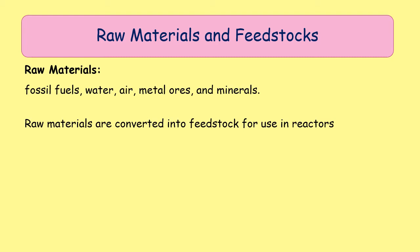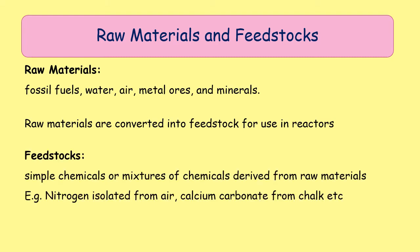Raw materials can sometimes be converted into what we call feedstocks to go into your reactor. A feedstock is a simple chemical or mixture that is derived from raw materials. For example, if air is the raw material and you isolate nitrogen from the air and use it, then nitrogen is a feedstock. If you take chalk — the rock — and purify it to get pure calcium carbonate, the calcium carbonate is a feedstock. If it has been processed, it is no longer a raw material; it is only a feedstock.